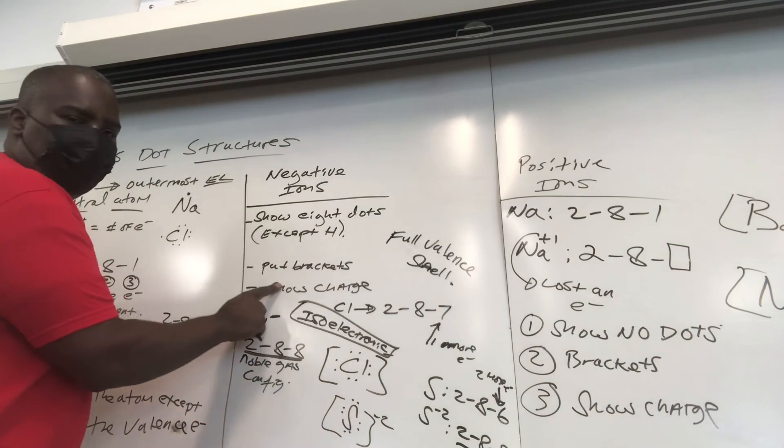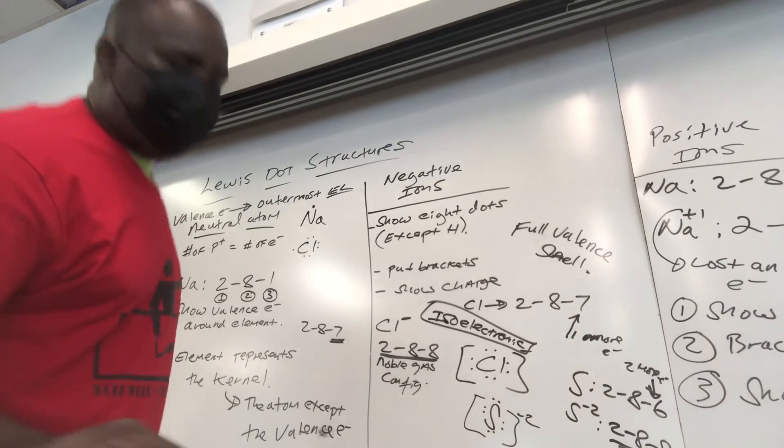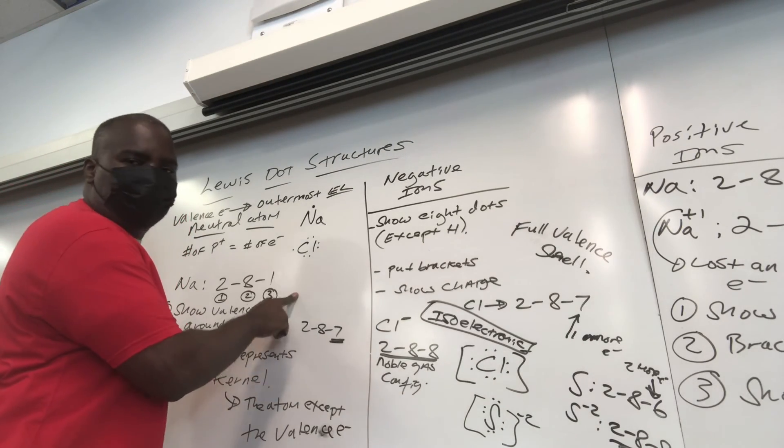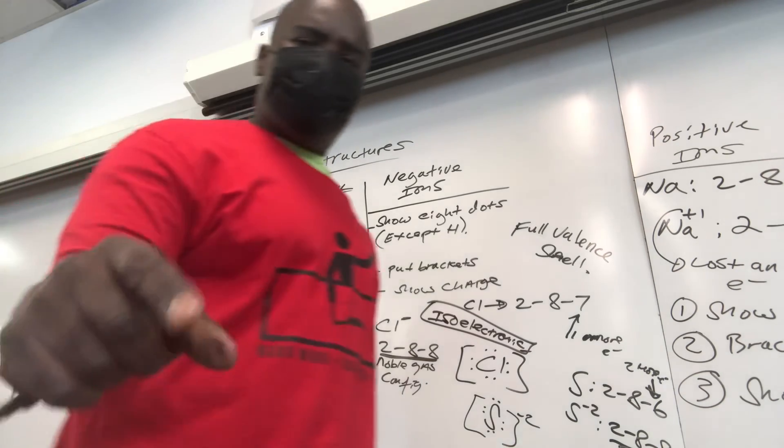Negative ions, 8 dots. And for neutral atoms, all you got to do is just put whatever valence electrons the neutral atom has on the kernel. You're good to go. All right guys, take care.